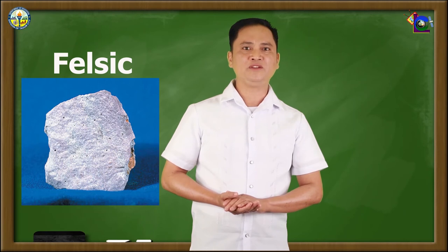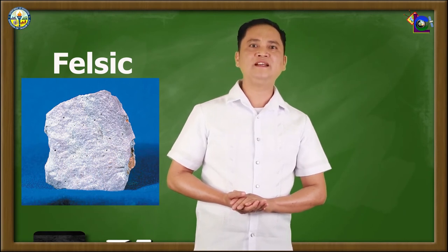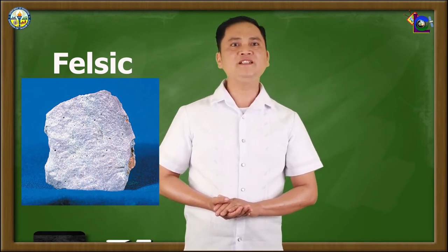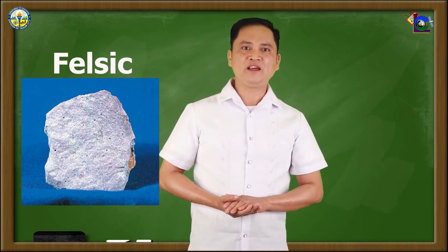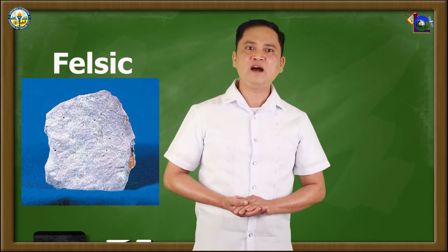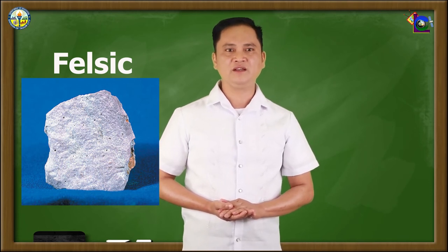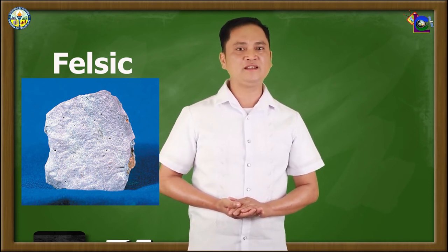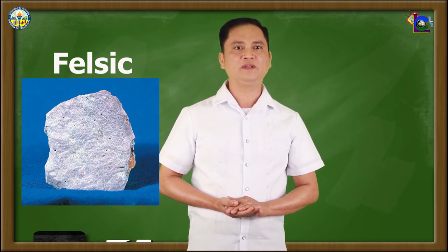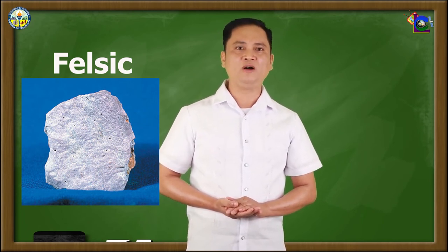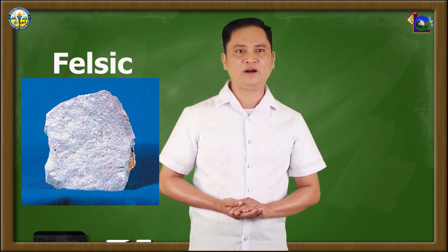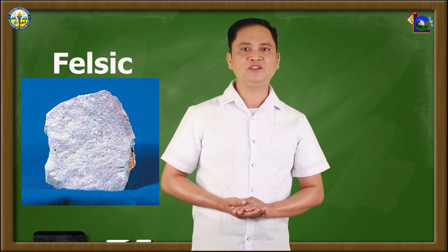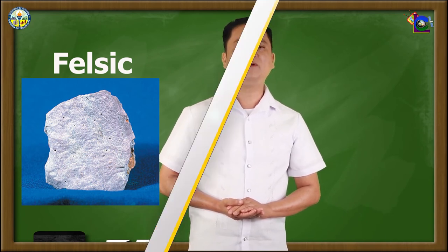Felsic igneous rocks have a very high silica content — more than 65% silicon dioxide. Their magma has high viscosity, more viscous than intermediate magma. They have a light color and very low density. They are composed of quartz and alkali feldspar. Examples are granite and rhyolite.